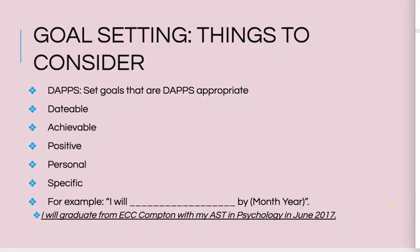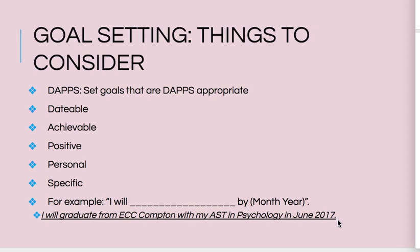Now we come to our goals page — this is very important, so feel free to pause and copy this down. When you do your presentation, all your goals will be in DAPS format. They will be dateable, achievable, positive, personal, specific, and they will have a monetary value, which means you would add up the cost of the materials to reach that goal. For example: 'I will graduate from Compton College with my AST in psychology by June 2018,' and the monetary value for this goal would be approximately $2,000 considering tuition and cost of books. All your goals in your presentation will be stated in the 'I will' format, be very specific, give the month and year, and state the monetary value.